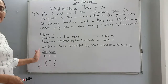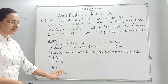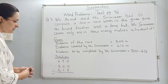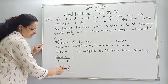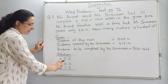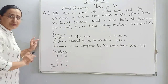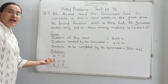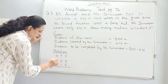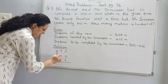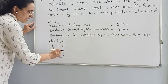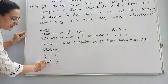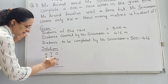Now let us start solving 500 minus 416. Children, earlier we have seen double borrow sums like this. Here we have 0 in the ones place and we have to minus 6 from it — we can't. So we need to borrow from the tens place, but tens place also has 0. So we go to the hundreds place. We take 1 from 5, which becomes 4, and the tens becomes 10.